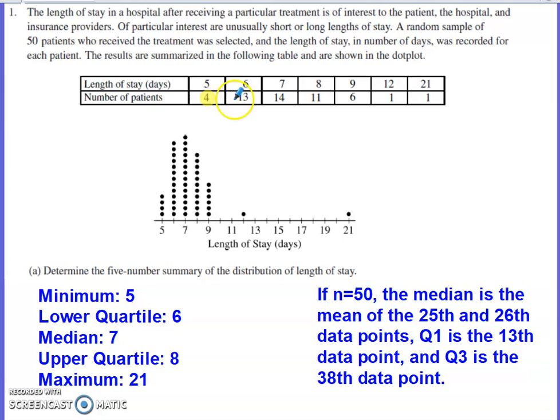I've got four data points here plus an additional 13 pushes me past 13, clear to 17. So I know that my 13th patient, the length of their stay was six days. There's my lower quartile.